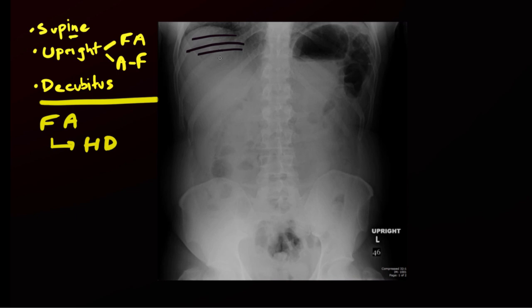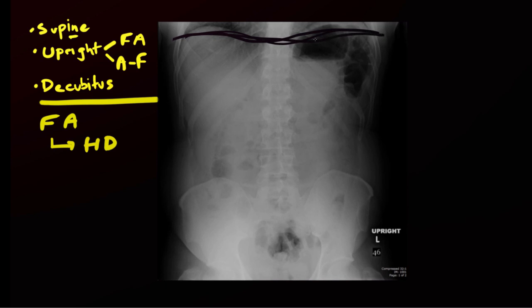This curvilinear banding pattern is known as the leaping dolphin sign, because it's been thought to resemble a leaping dolphin. Another finding you can look for when there's a large amount of free air is the continuous diaphragm sign, where you can see the right and left hemidiaphragms connected all the way across the midline due to free intraperitoneal air that nicely outlines these structures.